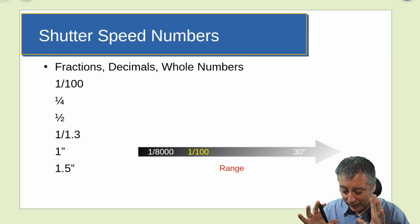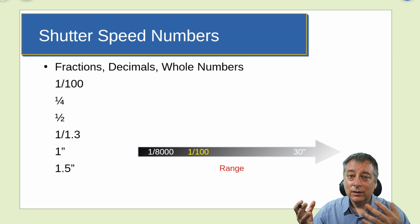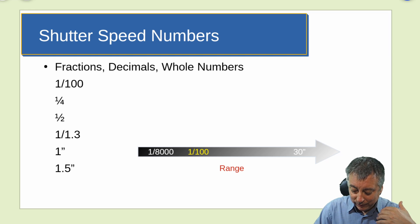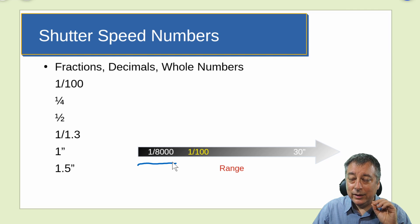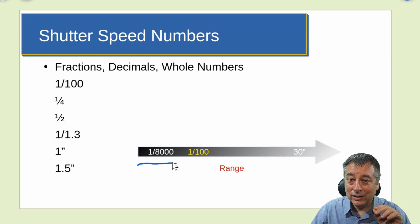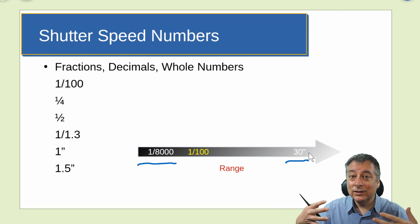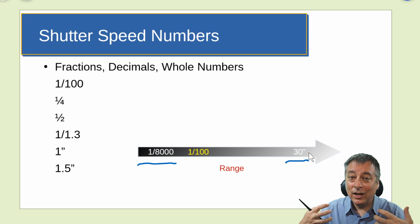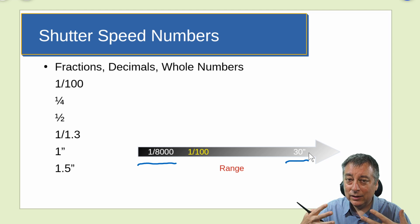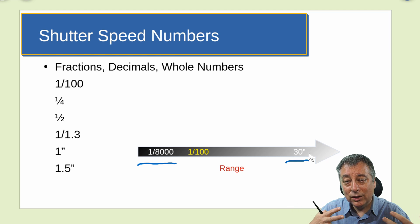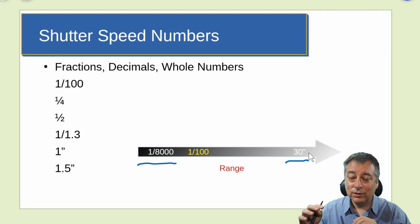Just understand that the faster the shutter speed, the darker the exposure. At 1/8000 of a second, it can be a very dark image because only 1/8000 of a second's worth of light hits the sensor. Longer shutter speeds — say 30 seconds — let in tons of light. Generally: faster shutter speeds darken the image, longer shutter speeds brighten the image.